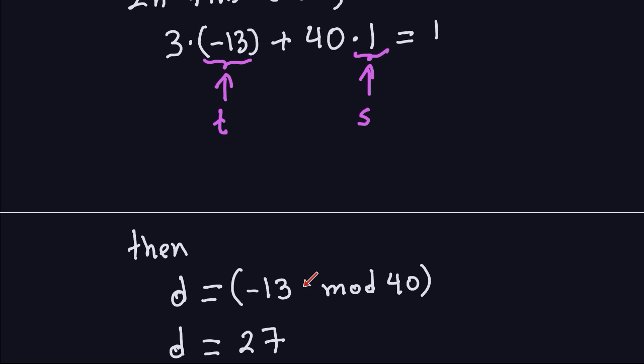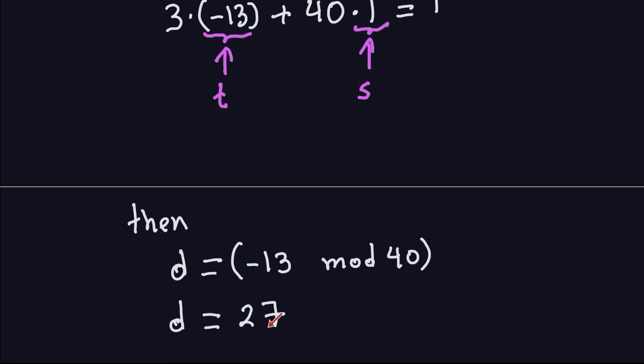D = −13 mod 40 means we divide −13 by 40 and take the remainder. Using your software for modular arithmetic, you'll find D = 27. I skipped some computation details since we covered them in previous videos. The key point is we now know how to compute the public and private key.